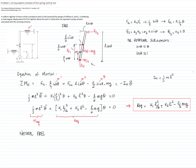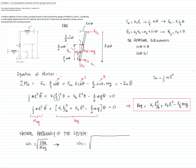If we want to calculate the natural frequency of the system, the natural frequency is defined as the square root of the equivalent spring constant divided by the equivalent mass. Since we already calculated both parameters, the natural frequency equals the square root of the spring constant we just calculated divided by the equivalent mass, which is (1/3)·M·L².